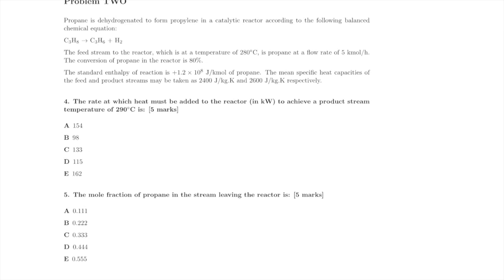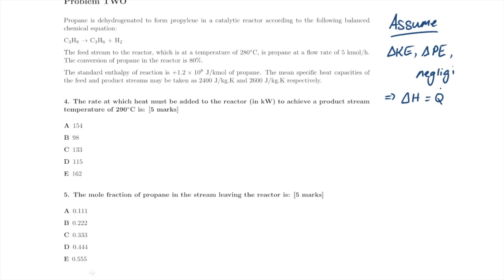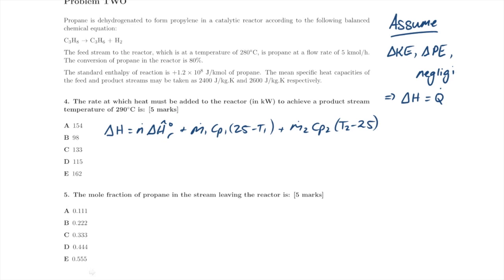Our first question: at what rate must heat be added to the reactor? We assume changes in kinetic energy, potential energy, and shaft work are all negligible. The result is that ΔH equals Q̇. Our expression for ΔH is given on the formula sheet provided in the test and we've also covered it in class. We substitute in all the numbers, taking careful note of the units.